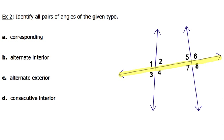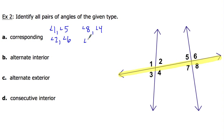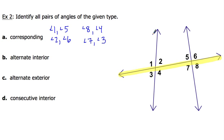For the corresponding angles, I'm going to have four pairs. Going in order: angle one is paired with angle five, angle two is paired with angle six, angle eight is paired with angle four, and angle seven is paired with angle three. The order I write them in doesn't really matter as long as you have the two angles paired together correctly — I could say angle three and angle seven, or angle seven and angle three. You just have to make sure you name them correctly.